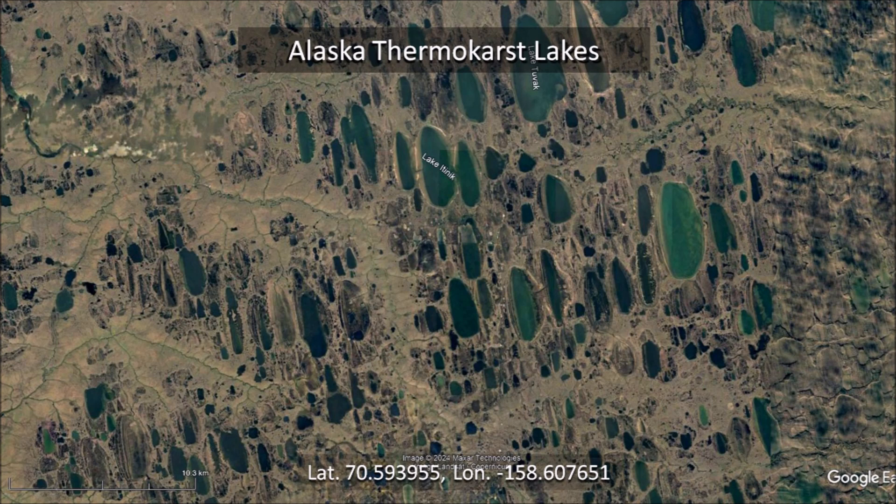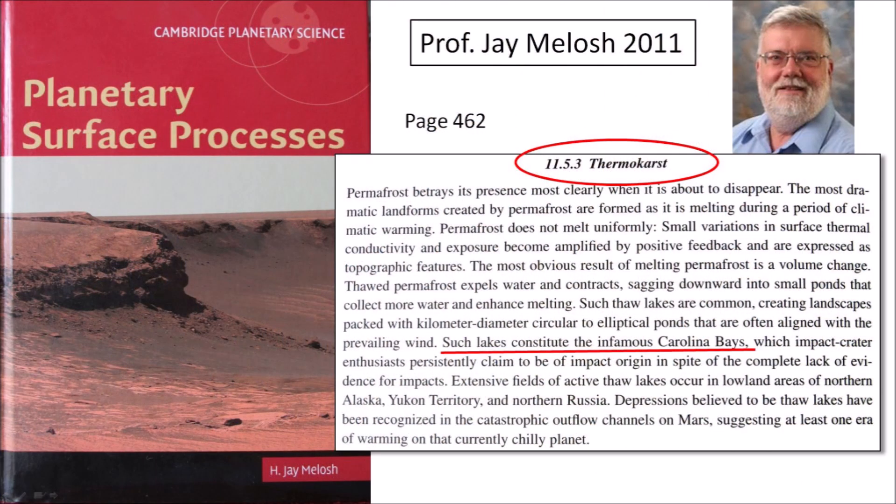Thermokarst lakes originate as sinkholes that form in permafrost during thaw cycles and then fill with water. The Carolina Bays cannot be ice-melt planforms because there were no glaciers or permafrost in North Carolina, South Carolina, or Georgia even during the last glacial maximum. Nevertheless, Professor Jay Melosh classified the Carolina Bays as thermokarst lakes in his book about planetary surface processes, saying: "Such lakes constitute the infamous Carolina Bays, which impact crater enthusiasts persistently claim to be of impact origin in spite of the complete lack of evidence for impacts."